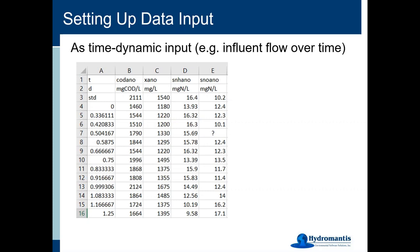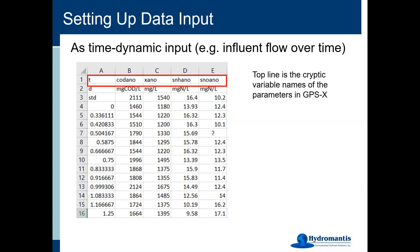The formatting style required for a GPSX data file: we have tools to help you build this file with correct formatting. The very first thing is that the left-hand column should always be time — always put time in the first column and use 'T' to designate it, which is the actual variable name for time in GPSX. Then on that top line, list all of the cryptic variable names of the parameters you are going to be reading data in for. There are lots of different ways to find out what the cryptic variable name is — the easiest is to hover your mouse over the name on any of our menus and it will pop that up for you.